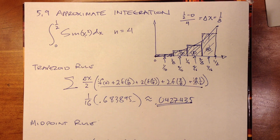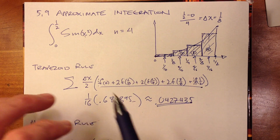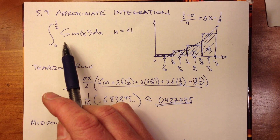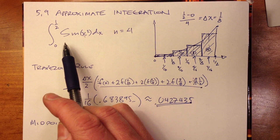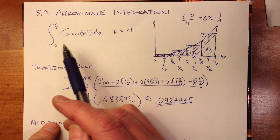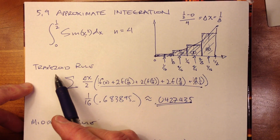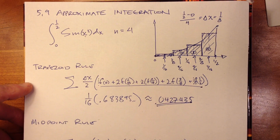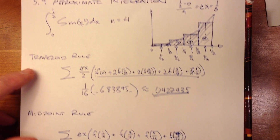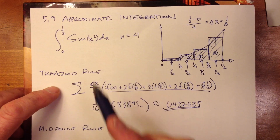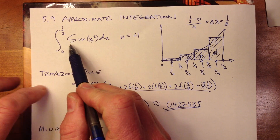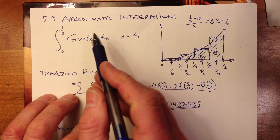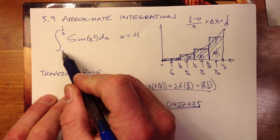Here we are doing an approximate integration problem. I've picked one that's fairly representative of what you might expect. We're going to do this three different methods: trapezoid rule, midpoint rule, and Simpson's rule. We're working with the function sine of x squared.